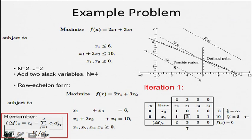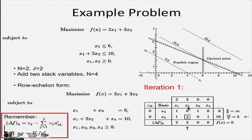Now let us see if the simplex method reaches this optimum. In the initial tableau, x1 and x2 are non-basic so their values are 0, while x3=6 and x4=10. This represents the point (0,0) — the origin, which is one of the corner points. Usually, taking all slack variables as basic variables starts you from the origin. Computing Δf_q: for x1, it is 2 − 0×1 − 0×1 = 2; for x2, it is 3 − 0×0 − 0×2 = 3. For the basic variables x3 and x4, the result is always 0. Since positive values exist, we have not reached the optimum.